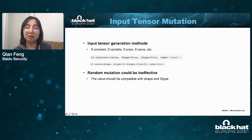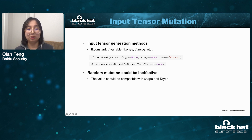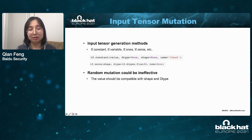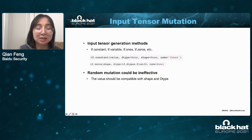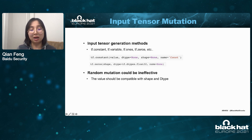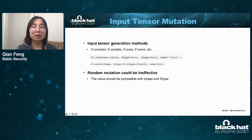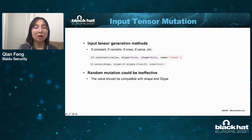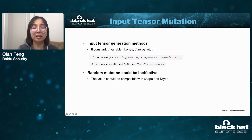Mutating a tensor means mutating those values in the tensor. Input tensor mutation uses TensorFlow APIs to generate these tensors. There are many TensorFlow APIs to generate tensors — for example, constant, zeros, or others. We want to construct a constant tensor using value, data type, and shape arguments. But random mutation is not going to work, because the value should be compatible with the shape and data type. If we randomly mutate those arguments, we will always get errors.